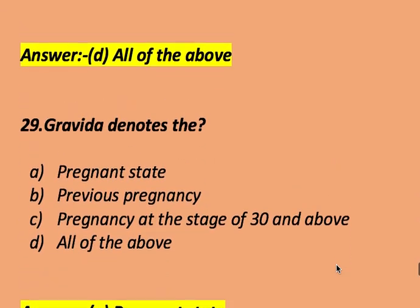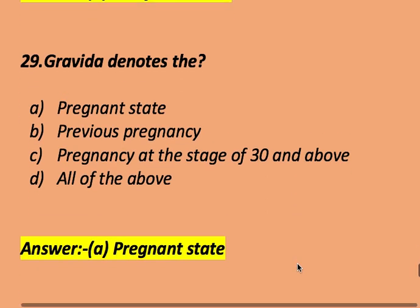The term gravida denotes: the pregnancy state, previous pregnancies, pregnancy at the age of 30 and above, or all of the above. The right answer is pregnancy state. Gravida denotes the pregnant state.